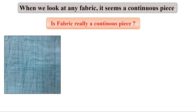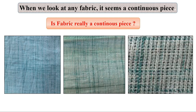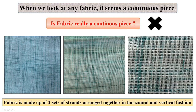Whenever we look at any fabric, it seems like a continuous piece. But is fabric really a continuous piece? Take a closer look at any fabric piece in your house — even zoom in with your camera. You will observe that while from a distance fabric seems like a continuous piece, it is actually made up of two sets of strands arranged together in horizontal and vertical fashion.